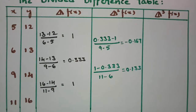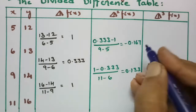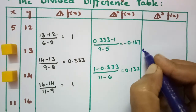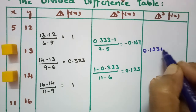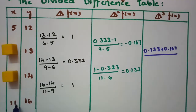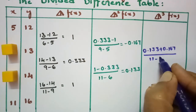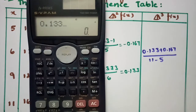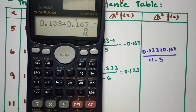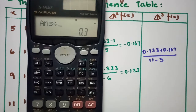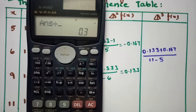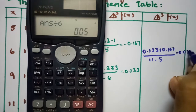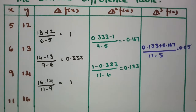For the third divided difference, we close these two: (0.133 − (−0.167))/(11−5) = 0.300/6 = 0.05. So the third divided difference is 0.05. This is how we fill the divided difference table.